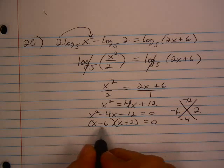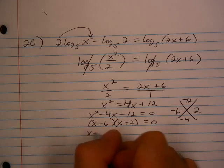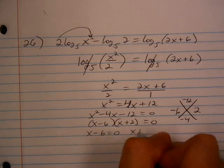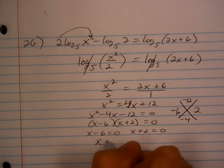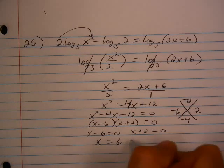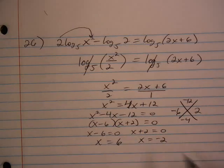Then I'm going to put each factor equal to 0 and solve. x minus 6 equals 0. x plus 2 equals 0. x will then equal positive 6 and negative 2.